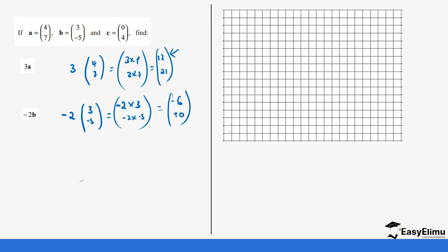So we are moving 6 steps on the x-axis but on the negative side, and 10 steps on the y-axis on the positive side. From our starting point, we count 6 steps to the left and then 10 steps upward. That point is our terminal, and then you join using a straight line to get our vector.